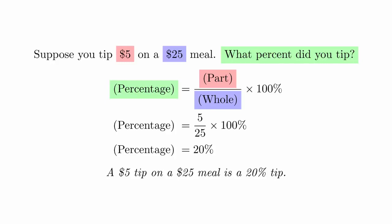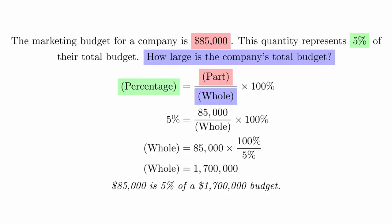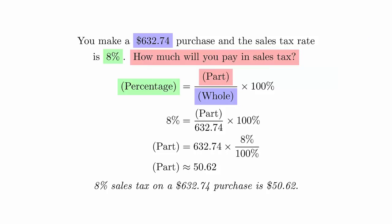Here are two other sample problems. The marketing budget for a company is $85,000, which represents 5% of their total budget. How large is the company's total budget? You make a $632.74 purchase, and the sales tax rate is 8%. How much will you pay in sales tax?